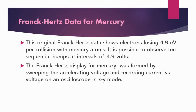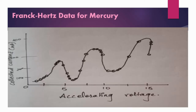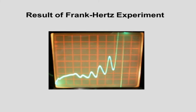Frank-Hertz data for mercury: It shows the dependence of the electric current flowing out of the anode upon the electric potential between the grid and the cathode. At low temperature, with a potential difference up to 4.9 volts, the current through the tube increases steadily with increasing potential difference.